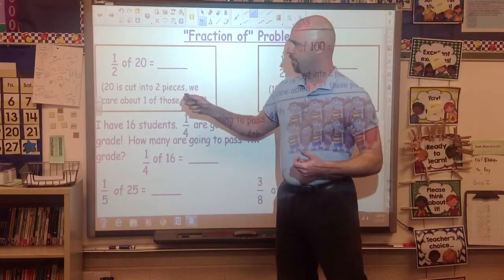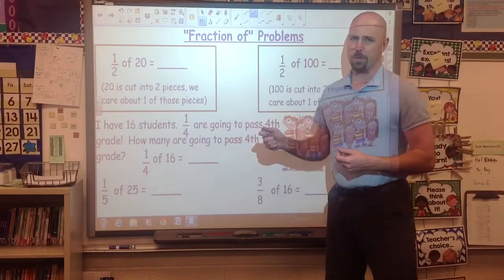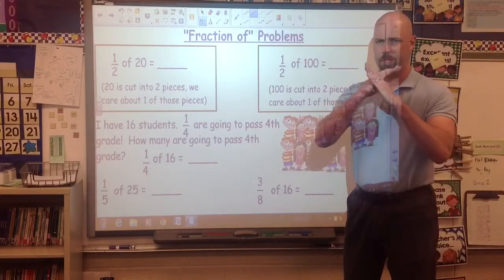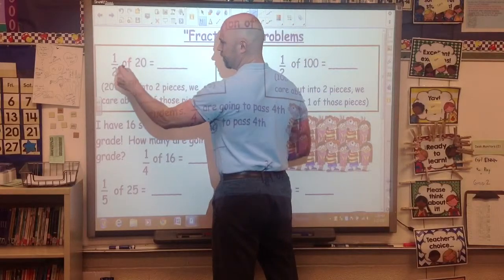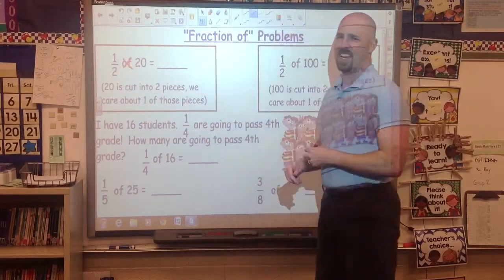So, in this case, one-half of 20. Well, what we're going to do is we're going to pretend every time we see of, it becomes a multiplication sign. So, we're saying one-half times 20.